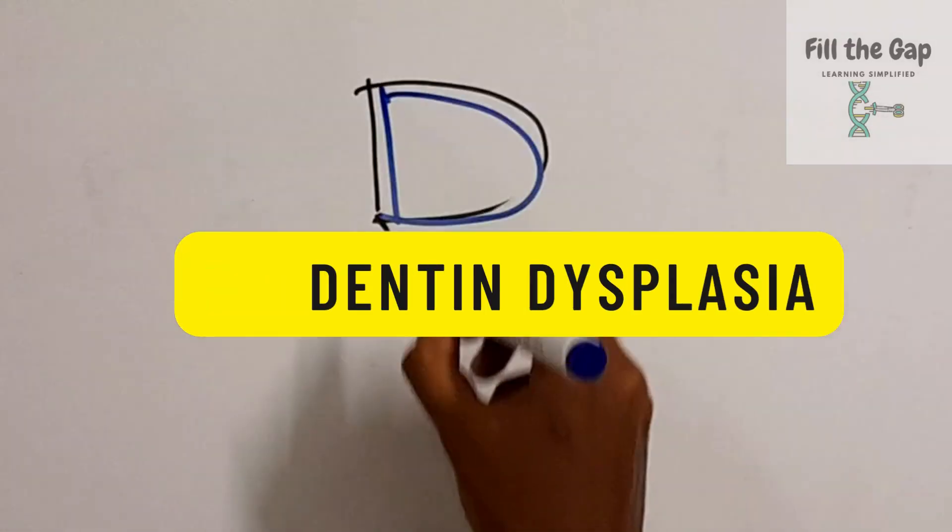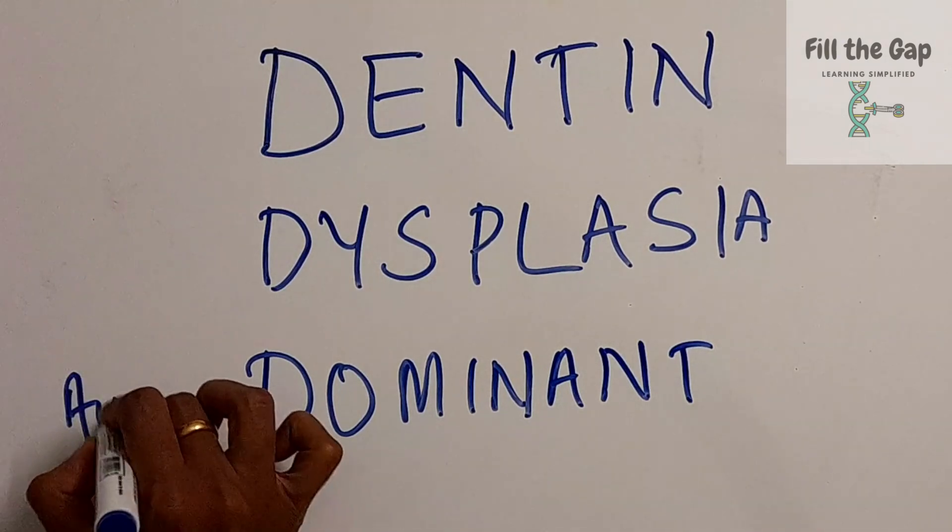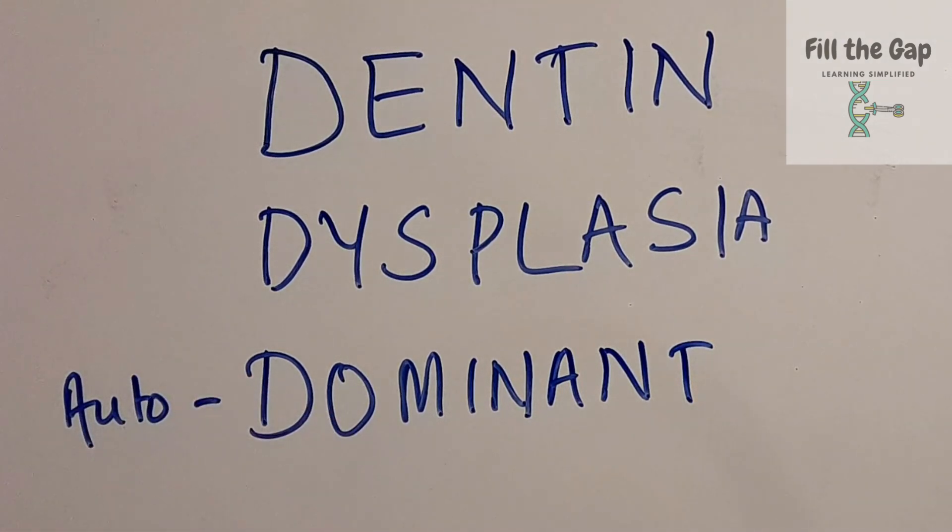So D for dentine dysplasia. Dentine dysplasia is an autosomal dominant condition. That's easy to remember because dominance starts with the letter D, so does dentine dysplasia.